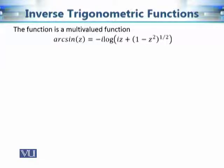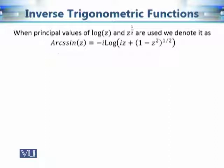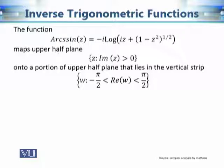Arc sine z is multivalued because both the logarithm and the square root are multivalued, and finding which values of z correspond to one particular branch is a tedious task. When principal values are used, we denote the principal branch with a capital 'A' — writing Arcsin z. By definition it is now a one-to-one function, not a multivalued function. Now let's talk about the geometrical properties of this inverse trigonometric function.